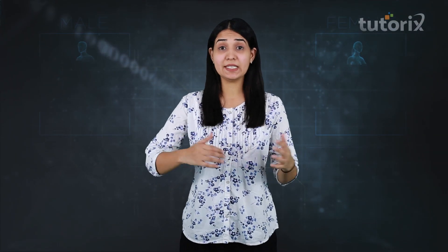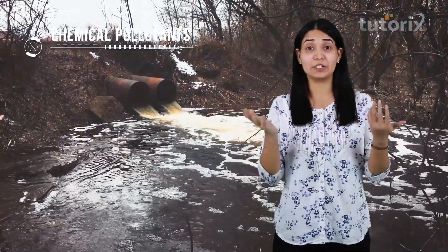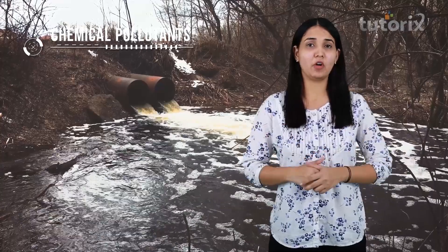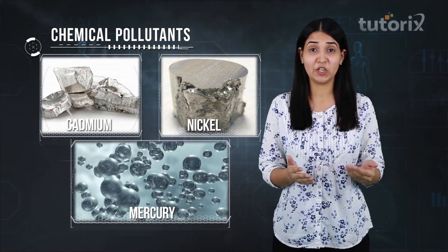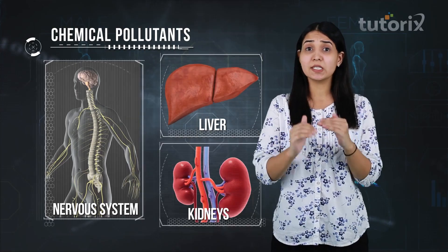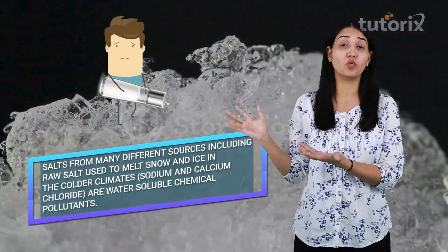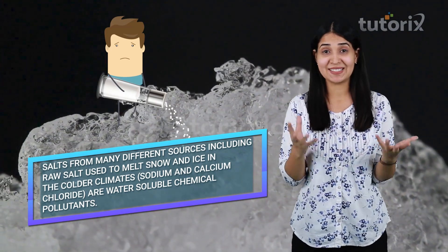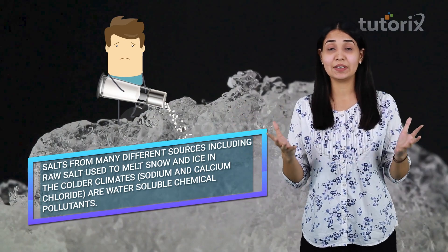Now let's move ahead and discuss the next category — chemical pollutants. There are many chemical substances which are soluble in water and can get inside the human body or other living organisms. For example, certain heavy metals like cadmium, nickel, and mercury are extremely harmful for our health because the human body cannot excrete them. Therefore, they can even damage our kidney, liver, and the central nervous system when the value is above the tolerance limit.